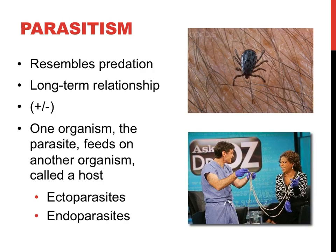There are three classifications of long-term relationships between different species based upon the impact that each species has upon the other. The first is called parasitism. In this type of relationship, one organism benefits while the other is negatively impacted — hence the plus-minus on the slide. A parasite feeds upon another organism called a host, and unlike predation, parasitism does not result in the immediate death of its prey. Parasites that live on the outside of an organism are called ectoparasites — the tick would be an excellent example, as would leeches and lice. In the bottom picture, a tapeworm found in the digestive tract of its host lives on the inside, and with the prefix endo meaning inside, it is referred to as an endoparasite.